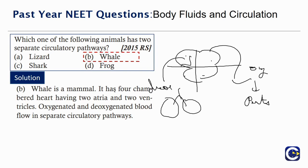Whale is a mammal. It has a four-chambered heart having two atria and two ventricles. Oxygenated and deoxygenated blood flow in separate circulatory pathways and they do not mix.